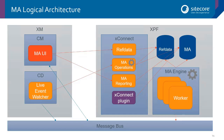On the XPF side we have XConnect, and part of XConnect is the reference data service — this is where all definitions are stored. Whenever you save a campaign in the marketing automation UI, it's pushed to the reference data service, which in turn pushes it to the reference data database. We also have the marketing automation operations and reporting API endpoints, and an XConnect service plugin responsible for validating whether data pushed to the collection is of interest to the marketing automation engine.